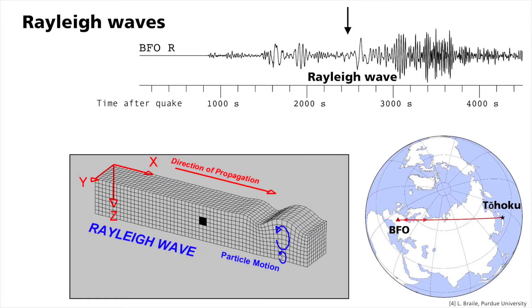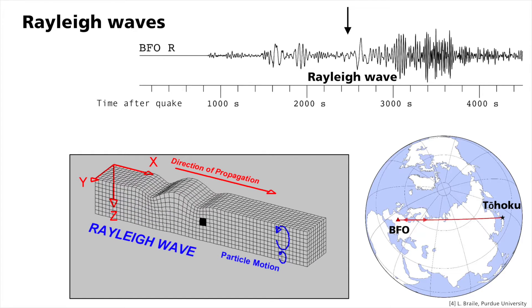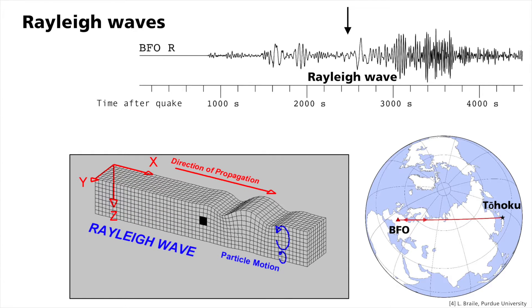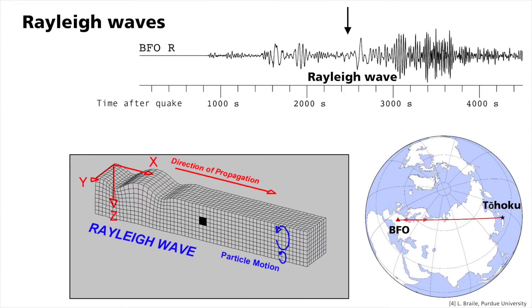The reason for this difference is the corresponding restoring force acting on it. While waves in the water are restored to equilibrium by the force of gravity, in Rayleigh waves this restoring force is the elasticity of the affected ground layers.